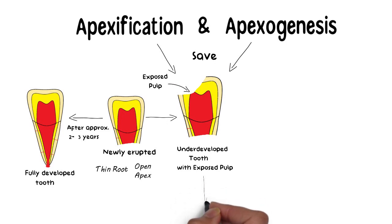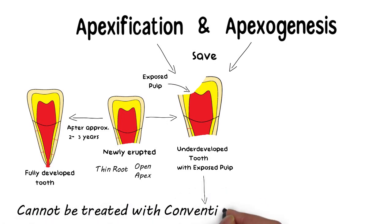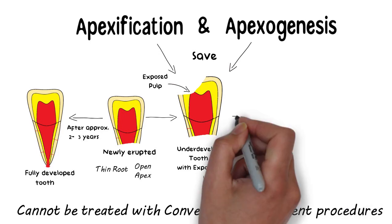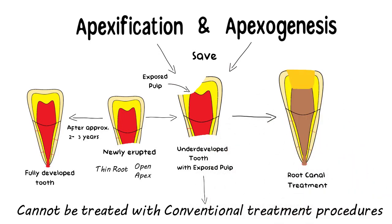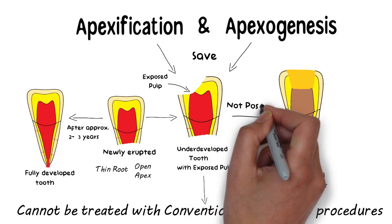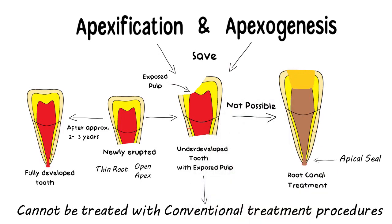This tooth with a wide open apex cannot be treated with just conventional treatment procedures. Root canal treatment cannot be done on these undeveloped teeth because the apical seal, which is very crucial for the success of any root canal treatment, cannot be achieved in teeth with open apices. Hence, conventional treatment plans are not applicable in these open apex cases.